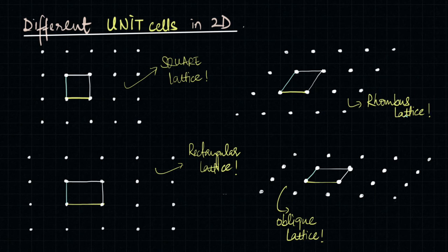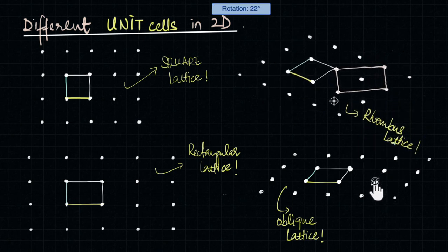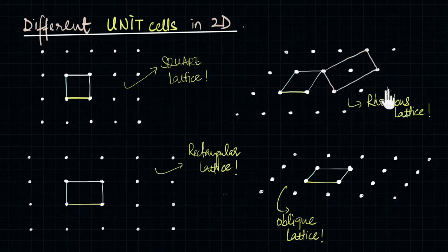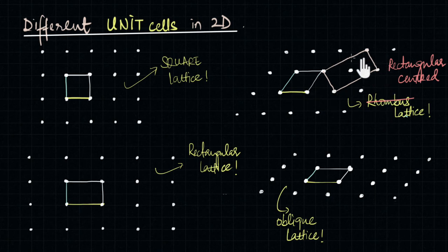For starters, all rhombus lattices actually have a different non-primitive unit cell which is more symmetric. Because a rectangle has more symmetry elements compared to a rhombus, the overall global symmetry of this lattice is better represented by a rectangle rather than the rhombus. So the more appropriate unit cell for this lattice is actually this non-primitive rectangle centered — because there's an extra lattice point at the center — rather than the rhombus. So all rhombus lattices should actually be called the rectangular centered. If this is your first video in this series, I highly recommend watching the previous video titled 'What is a Unit Cell' to better understand the role of symmetry in determining a unit cell.